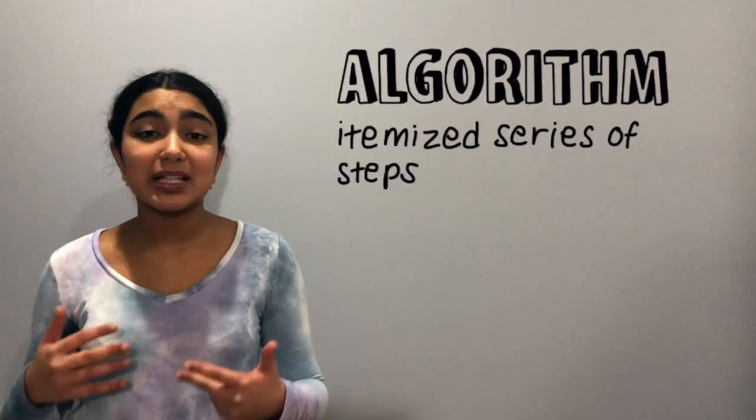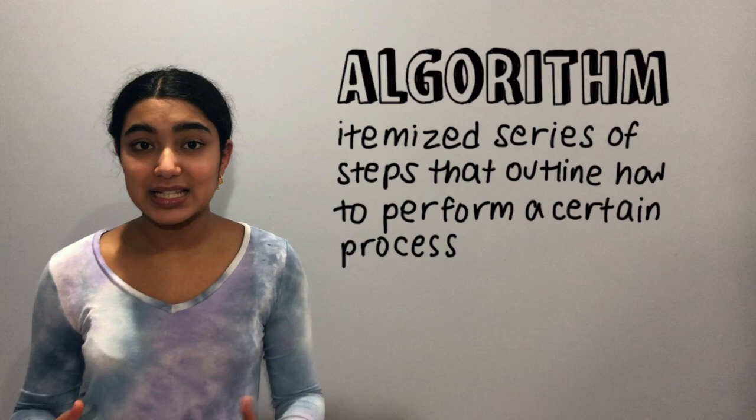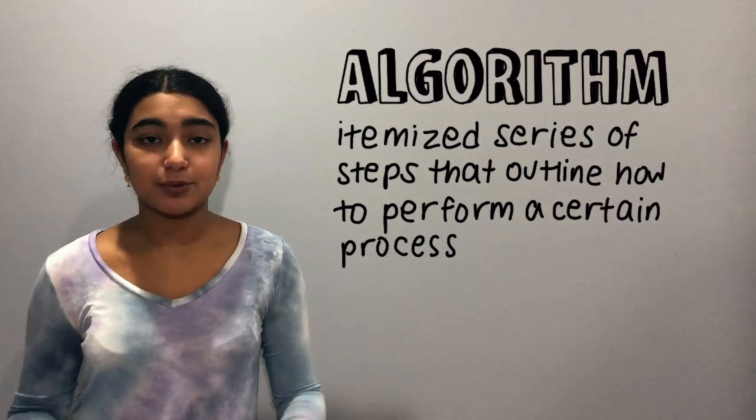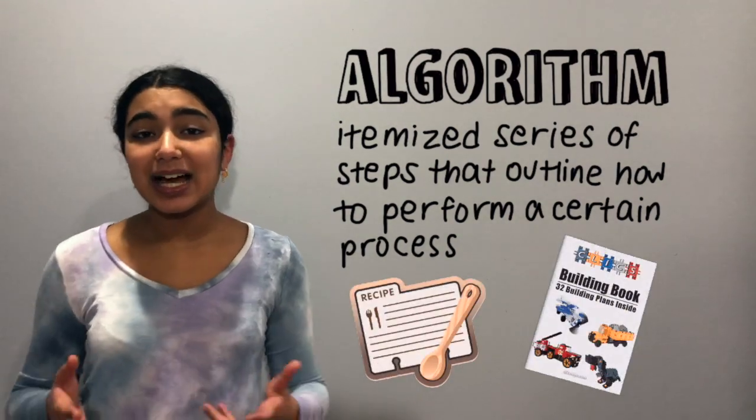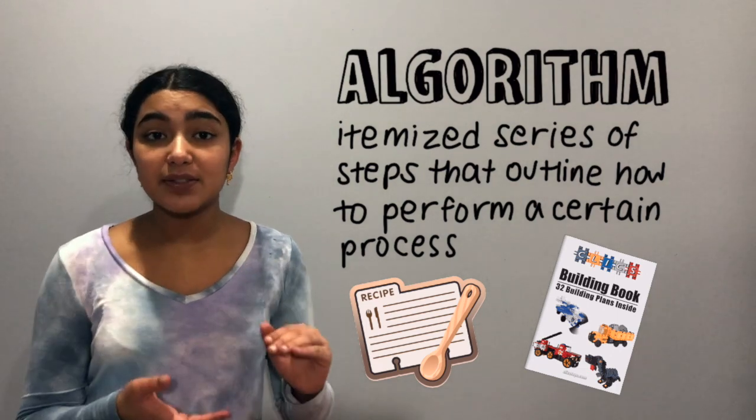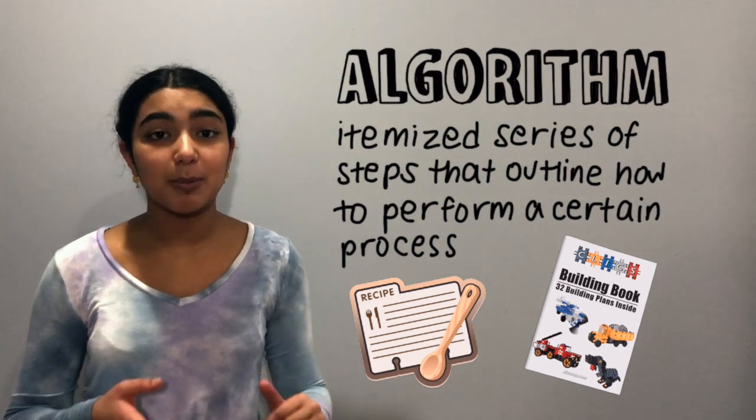Algorithms are just an itemized series of steps that outline how to perform a certain process. We see them everywhere in our daily lives, from building manuals to recipes. Algorithms in computer science are the same thing, just a list of instructions for the computer to follow to accomplish a certain goal.